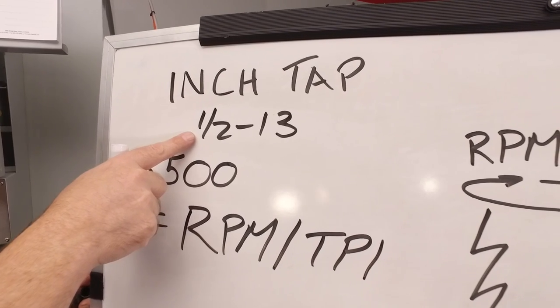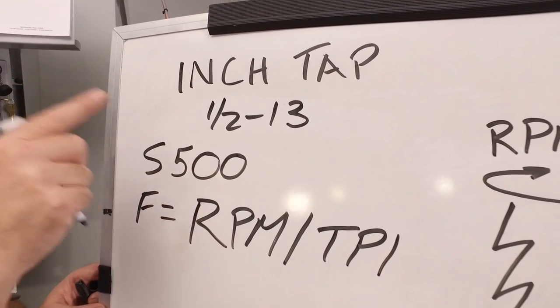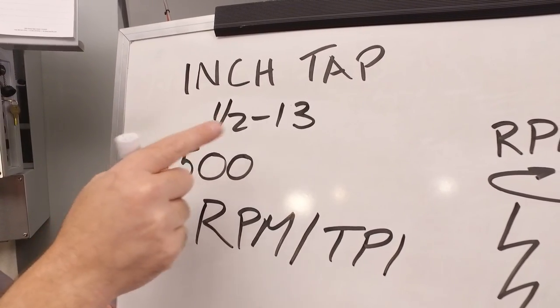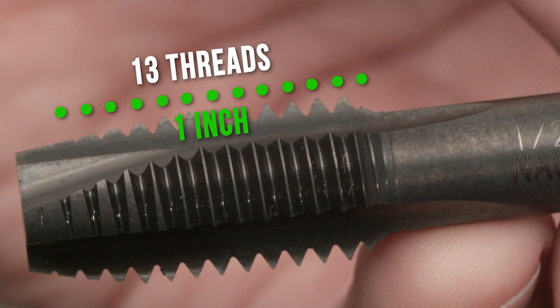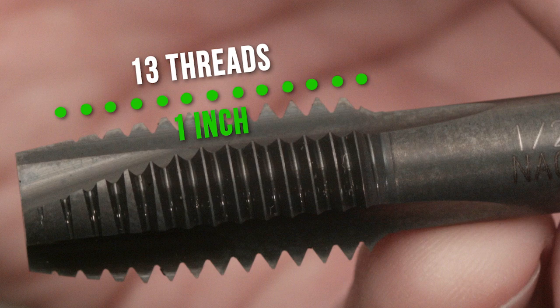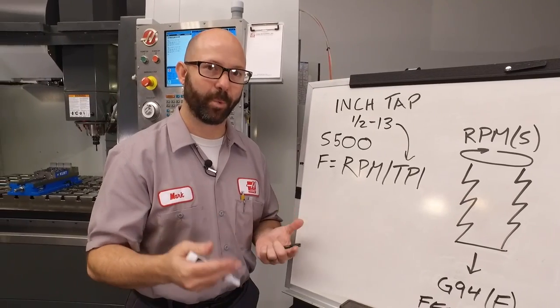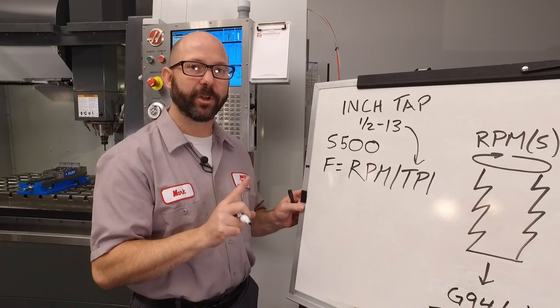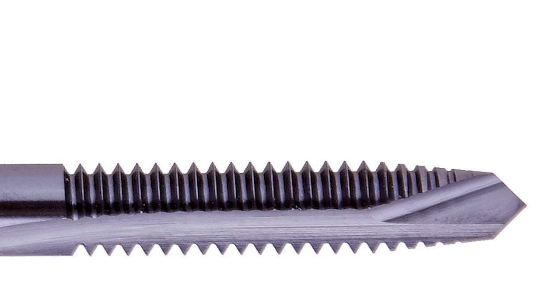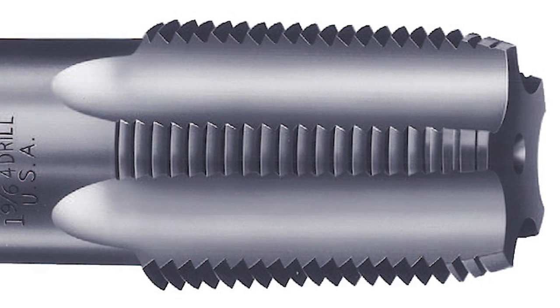We're using a half 13 tap. One half inch is the basic diameter, and 13 is our TPI. If we were using a quarter 20 tap, our TPI would be 20. This formula is going to work for all of your inch taps. I'm talking about your cutting taps, your form taps, and even those NPT taps.